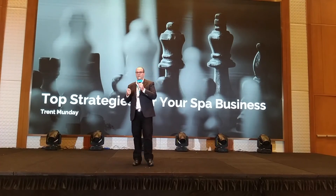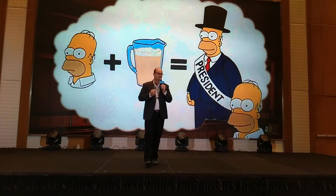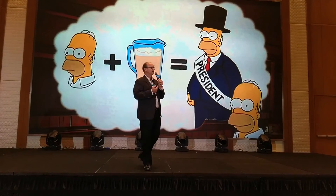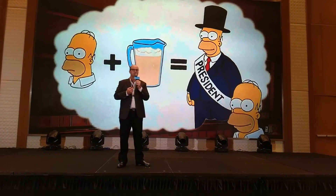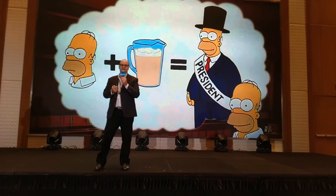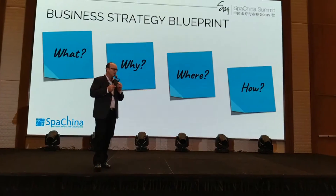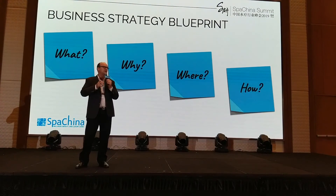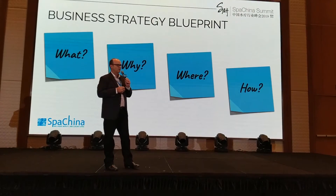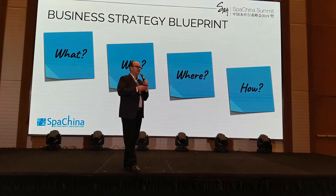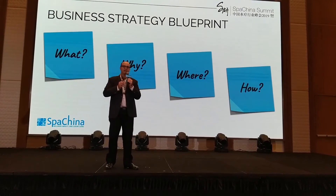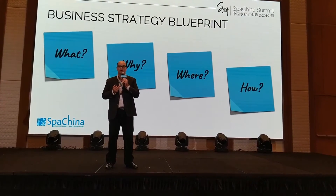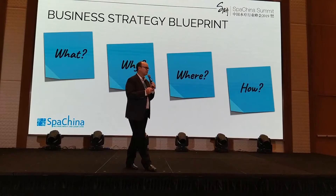Strategies can be very complicated, or they can also be very simple. What I want to do today is walk through four simple steps. What is the current state of your business? Why did you get to this current state? Where do you go from here? Those two we'll look at in conjunction, because the why informs the way you can go. And then we'll have a couple of points on how.